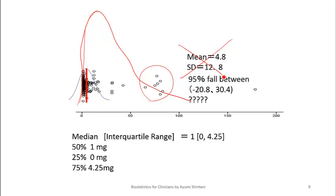What is median? Median is the middle point. If you order the data from lowest to highest — with 183 patients, many having zero — the value at the 50th percentile, the middle person's value, is 1 mg. That's the median. The middle point of 183 patients is the 92nd person, and that person's value was 1 mg.